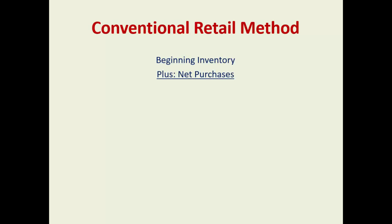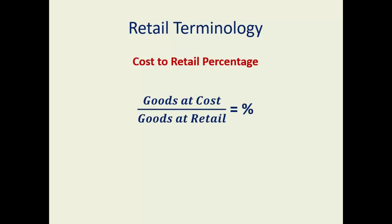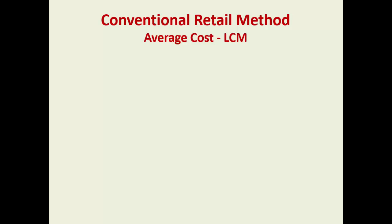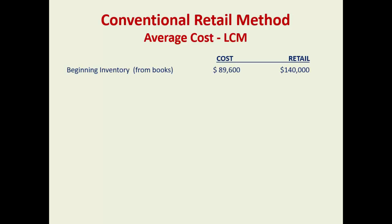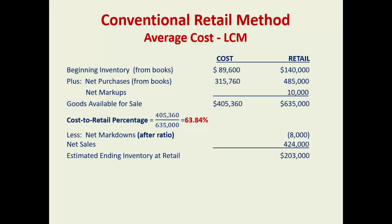With the conventional retail method, the key difference is where you add the information. The cost to retail percentage is calculated the same way as the other retail method: goods at cost divided by goods at retail, cost divided by sales price. The conventional retail method is thought to add a lower of cost or market component to the average cost method. The key difference is when you subtract those markdowns — with the average cost method it's before the ratio, while the conventional retail is after the ratio. This change can affect the ratio, and when you're talking about tens of thousands of dollars worth of inventory, it can be a significant amount.